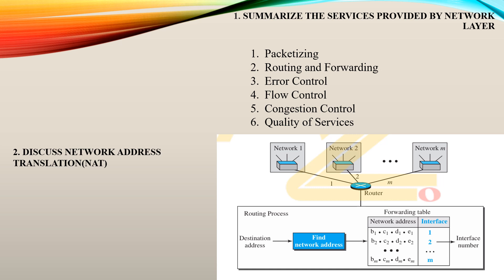Routing and forwarding tells which path the data has to follow — specifically, the number of hops it is going to forward. Error control, flow control, and congestion control ensure there is no error, proper flow in the transmission line, and no traffic or congestion. Quality of service ensures complete reliability and high efficiency. These are the six services provided by the network layer.